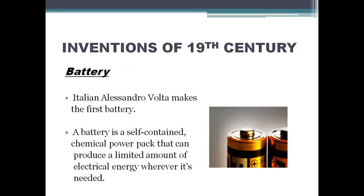Next are the inventions made in the 19th century. We discuss three major inventions. First is the battery. Italian Alessandro Volta made the first battery. A battery is basically a self-contained chemical power pack that can produce a limited amount of electrical energy wherever it is needed.